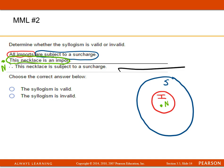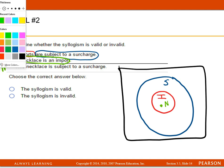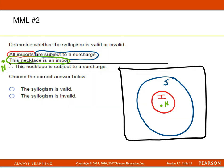So here is my diagram. Now I'm going to look at their conclusion, which says this necklace is subject to a surcharge. That is valid, because all imports are subject to a surcharge, and the necklace is an import. So this one is valid.